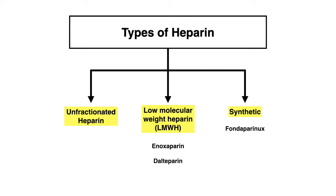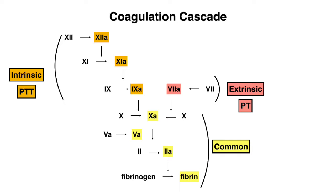To get a better understanding of how heparin works, we need to understand the coagulation cascade. This is a very bare bones overview, so if you are looking for more detail, please look at some other sources. We start with factors 12, 11, and 9 — we skip factor 10 here because it's part of the common pathway further down. Factors 12, 11, and 9 are included in the intrinsic pathway, which is often measured by our PTT value.